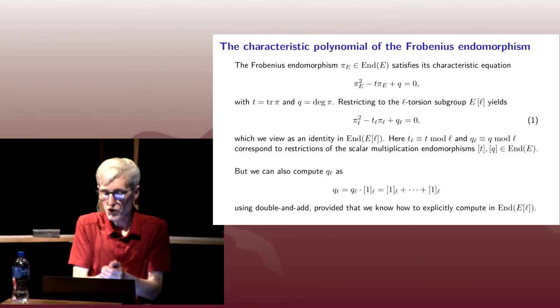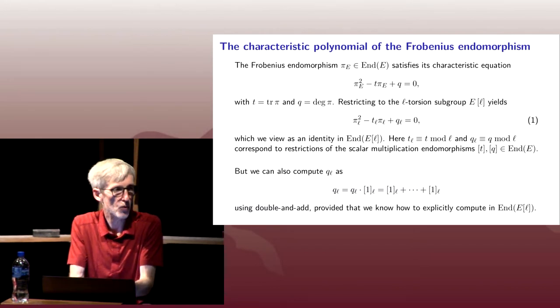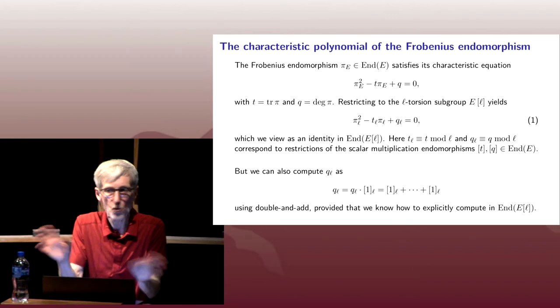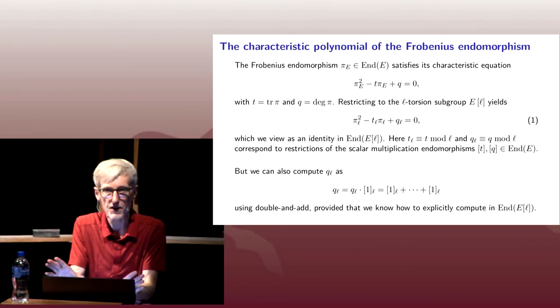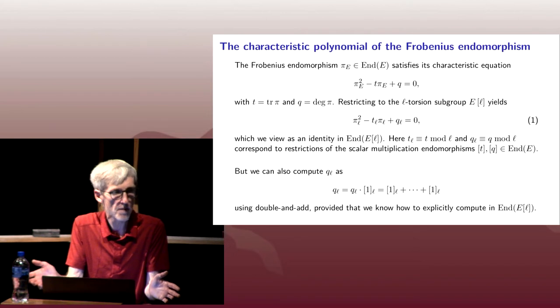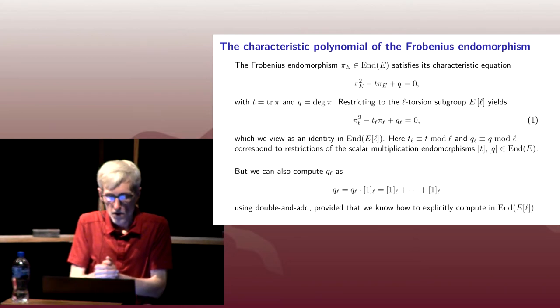So our strategy, rather than solve for t_l, we're just going to try every possible value because there aren't that many to choose from. You can be a little bit more clever than that, but it turns out being more clever doesn't actually improve the asymptotic running time of the algorithm. You might as well just try every possibility.